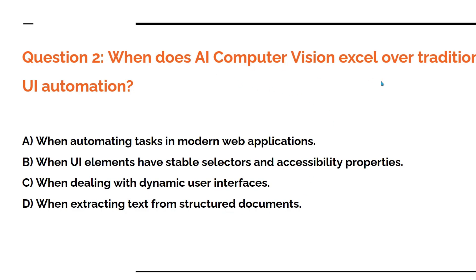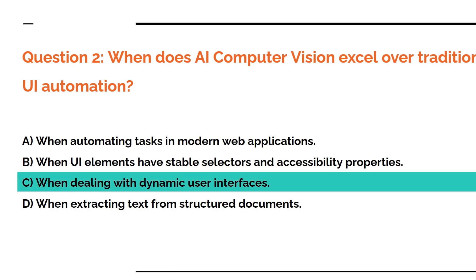Now tell me when you should go for AI computer vision. Pause and comment your answer. The answer is C — when dealing with dynamic user interfaces.